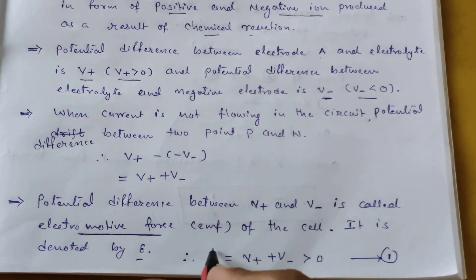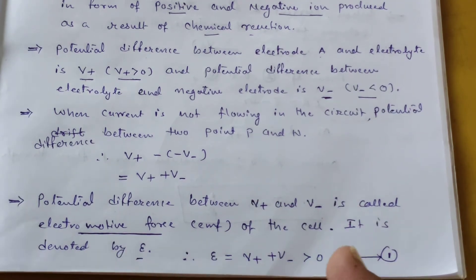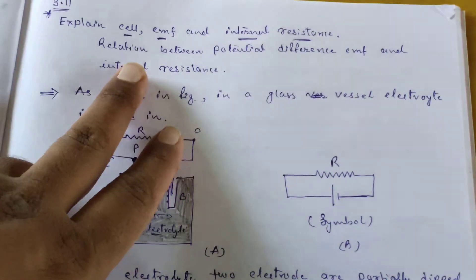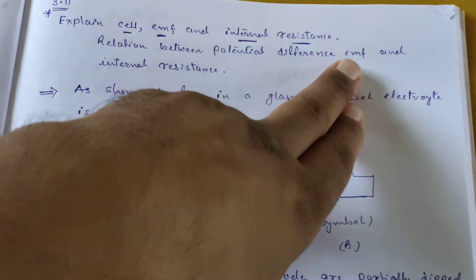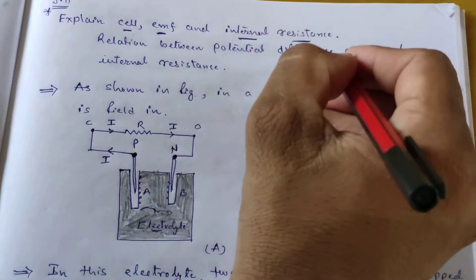Now look at the definition of electromotive force and try to find the relation between potential difference, EMF, and internal resistance — these are three important things.